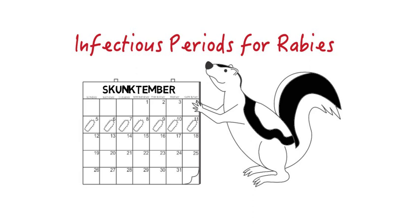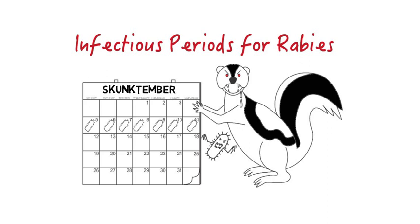Skunks have been reported to shed virus up to eight days before onset of signs. The incubation period can be both prolonged and variable. Virus often remains at the inoculation site for a considerable time, explaining the efficacy of post-exposure prophylaxis by local infiltration of rabies immune globulin. Most rabies cases in dogs develop within three to twelve weeks, but in one reported human case of rabies, the incubation time exceeded eight years.